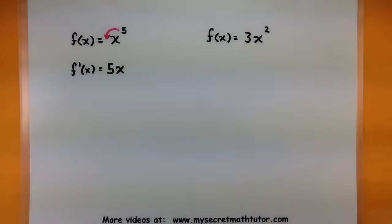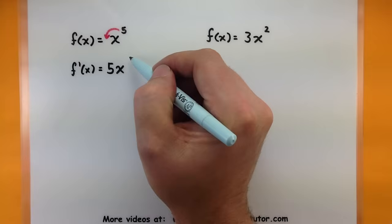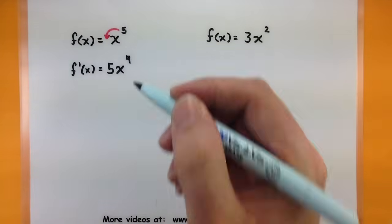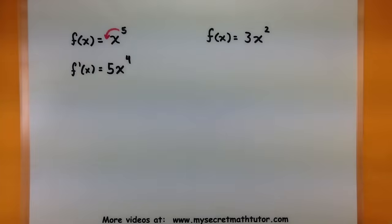Now comes the other part of this. This will also have a power but it's reduced by one, so five minus one is now four. So the derivative of this function: 5x to the fourth power. Just that simple.